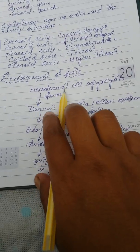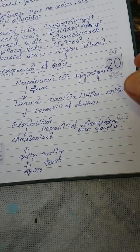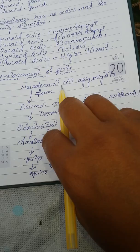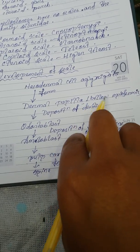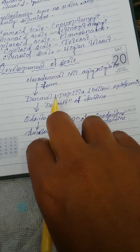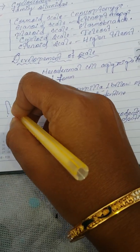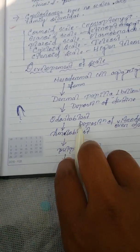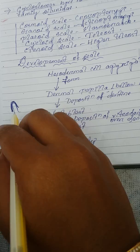Development of scales: Scales are developed in the mesoderm of the dermis. First, mesodermal cells are aggregated to form a dermal papilla. This dermal papilla is formed below the epidermis. The dermal papilla then deposits dentine over it, forming a structure called odontoblast.